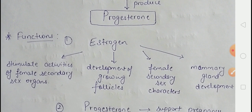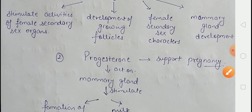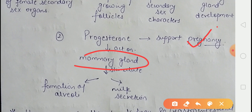Estrogen stimulates the activities of female secondary sex organs and is responsible for the development of female secondary sex characters. It also promotes the development of the mammary glands. Progesterone mainly supports pregnancy. It acts on the mammary gland, stimulating the formation of alveoli — cyclic structures that store and secrete milk.